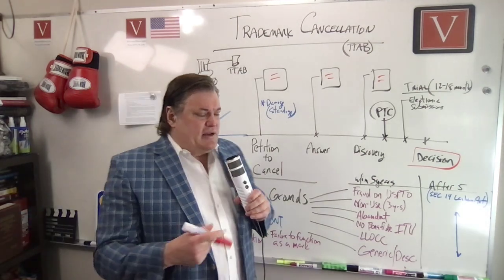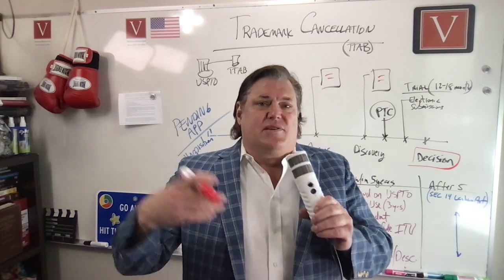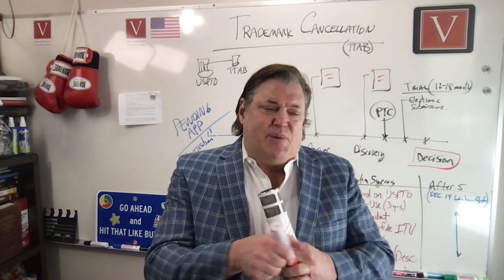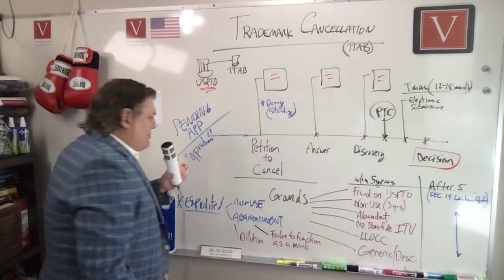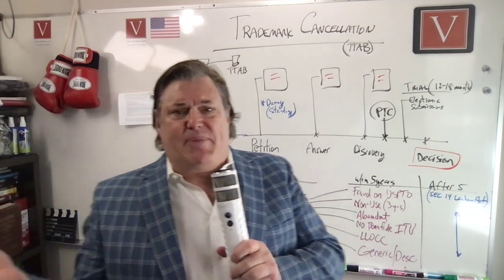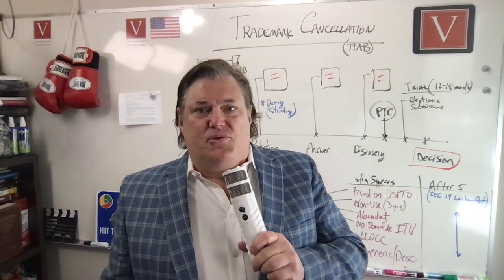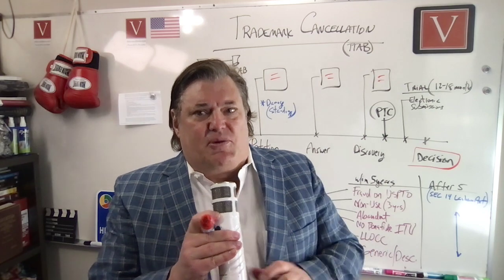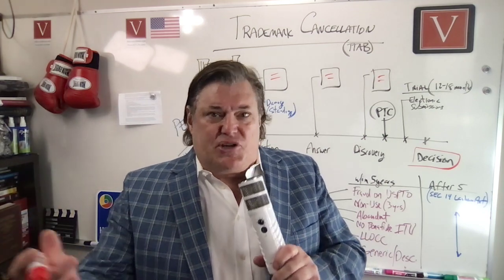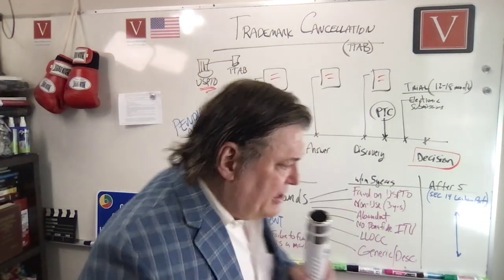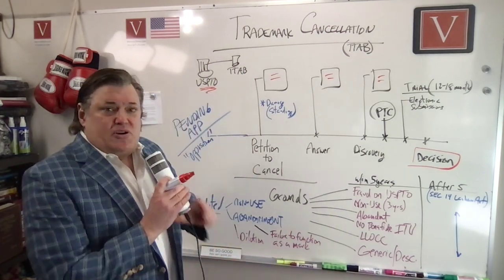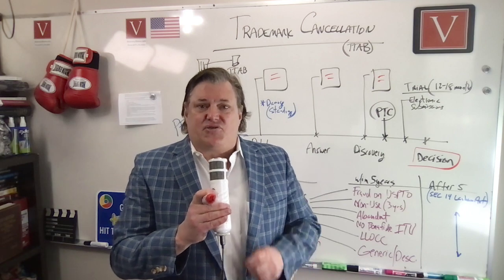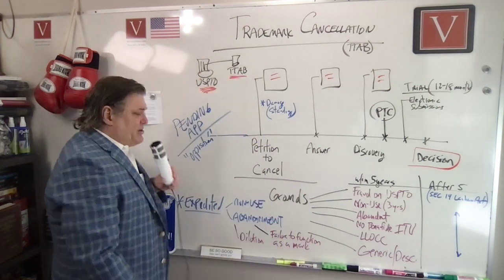If somebody is using a trademark in a way that conflicts with your brand or creates a confusing similarity with your brand, there are grounds to cancel somebody else's trademark, even though it's registered. The USPTO — the Patent and Trademark Office — is the one that registers those trademarks. Sometimes they give out marks, just like patents, that frankly aren't valid. The USPTO will often only do a basic search before granting a trademark, searching their own records and maybe some other sources.